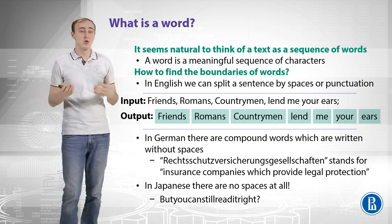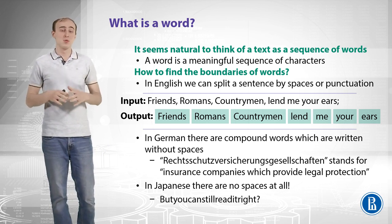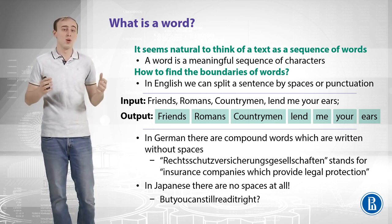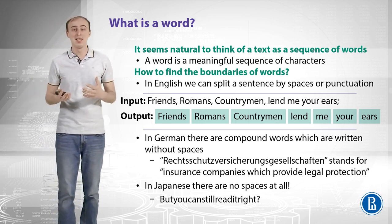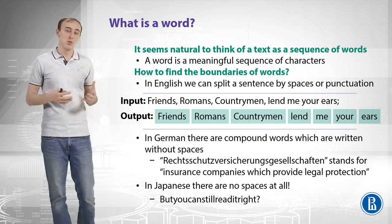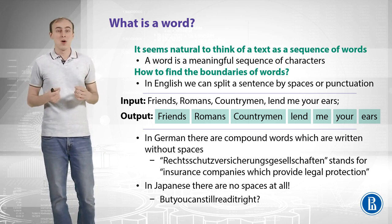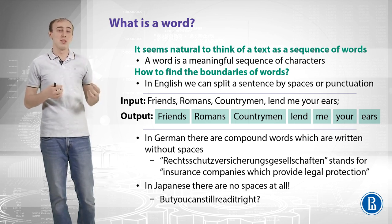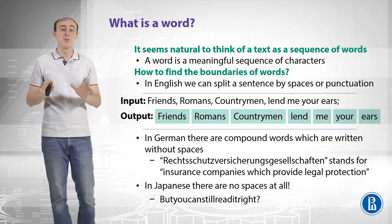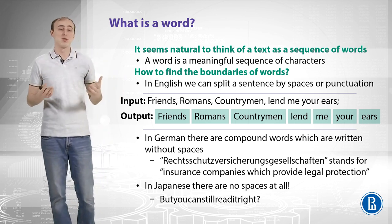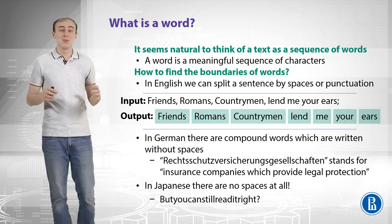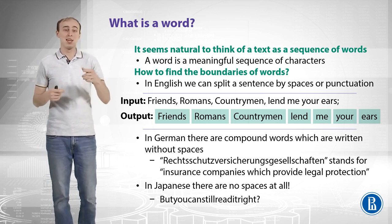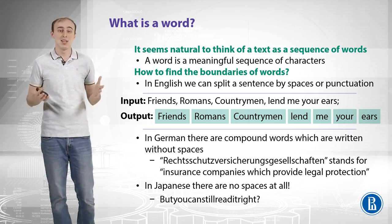It could be more difficult in German because German has compound words written without spaces. The longest word still in use — which you can see on the slide — actually stands for insurance companies that provide legal protection. For analysis of such texts it could be beneficial to split compound words into separate words since each part makes sense on its own. Japanese is a different story: it doesn't have spaces at all, but people can still read it. Even the example at the end of the slide shows an English sentence without spaces — not a problem for a human being.